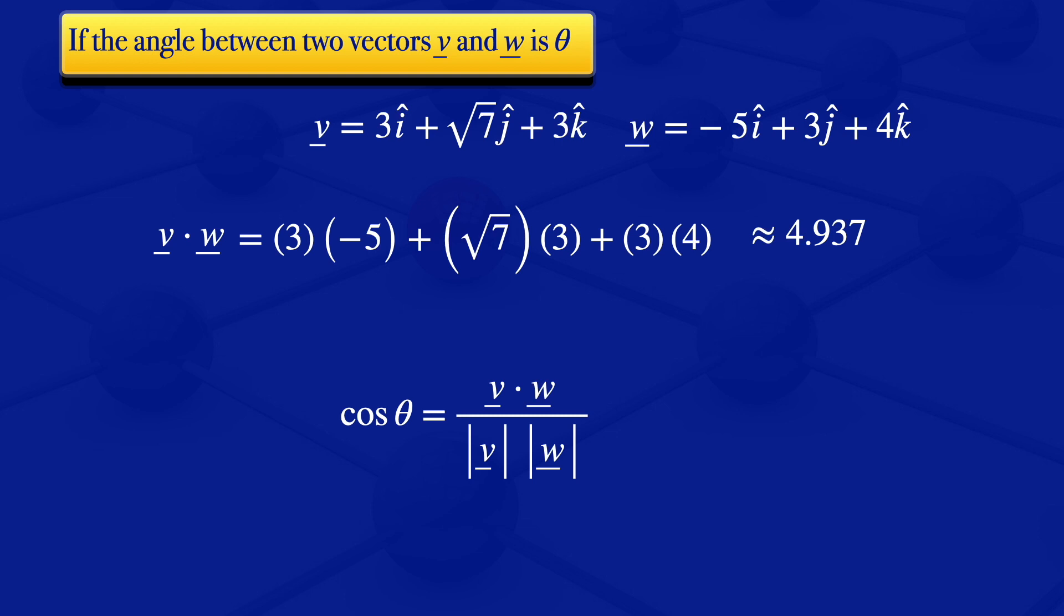So we have found the dot product. What we now need to find is the norms of the vectors V and W. For the norm of V, we square these elements and then we add them, then take the square root. So the norm of V equals the square root of 3 squared plus 7 plus 3 squared, which gives us 5.